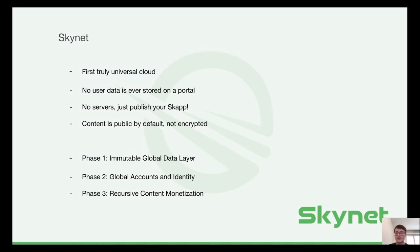Skynet is the first truly universal cloud. As a cloud, it gives you access to all of your content from any device and lets you share content with anybody. But the special thing about Skynet is that it also lets you share content seamlessly between apps. For example, if you don't like Twitter's feed algorithm, just move your feed over to some other SCAP — some kind of Twitter clone. Applications can save data about you, but you are in control of that data, and it's up to you to share it with any other application. That works without storing any user data on portals, which makes portals stateless.